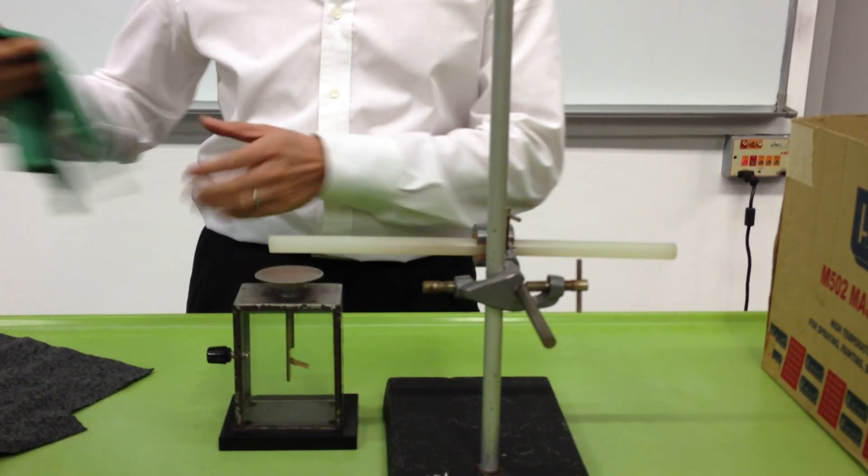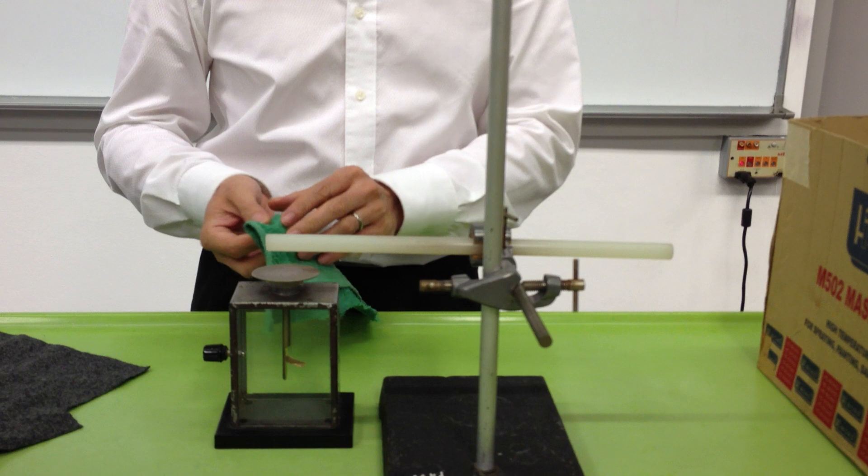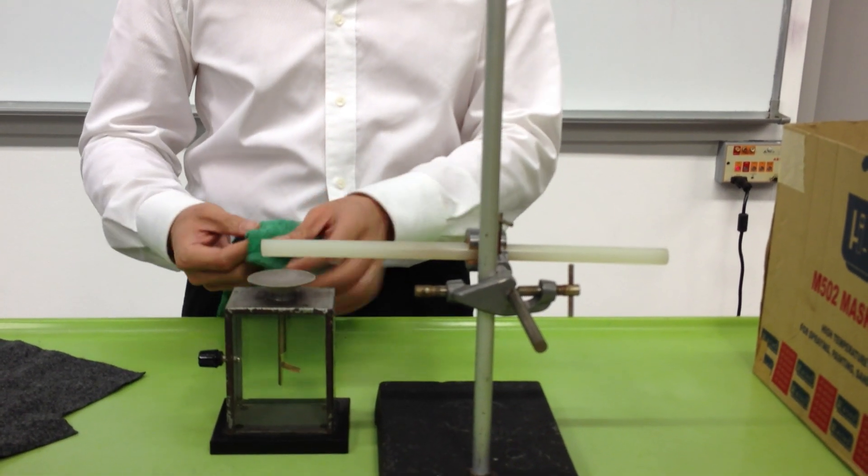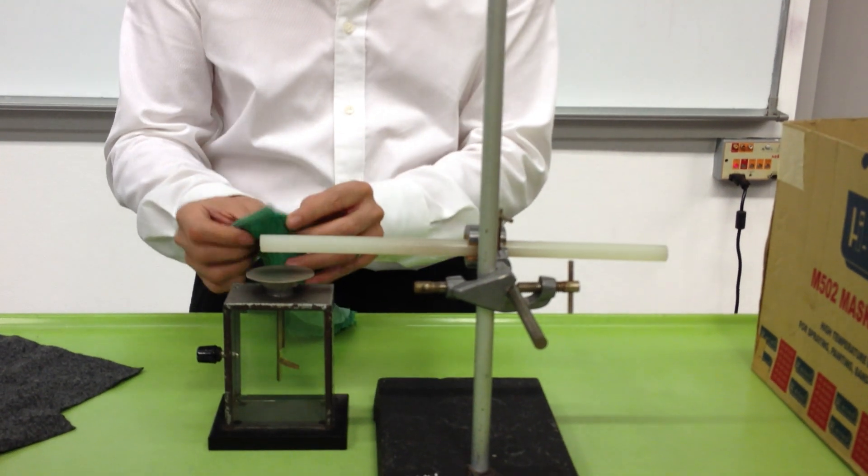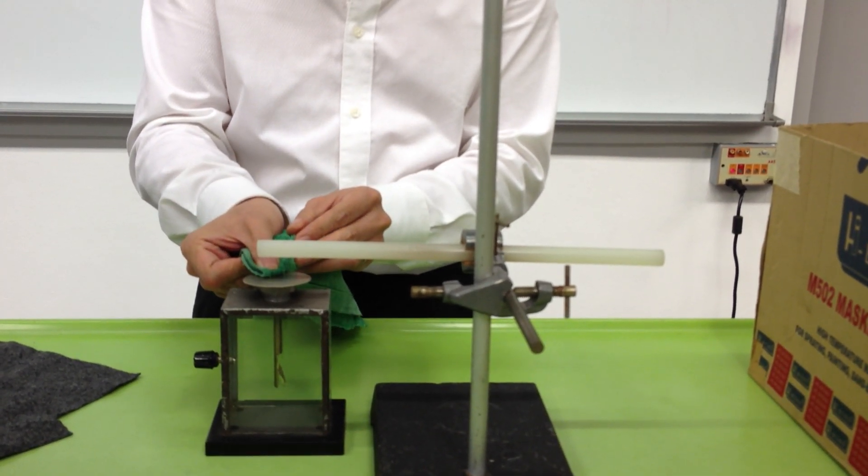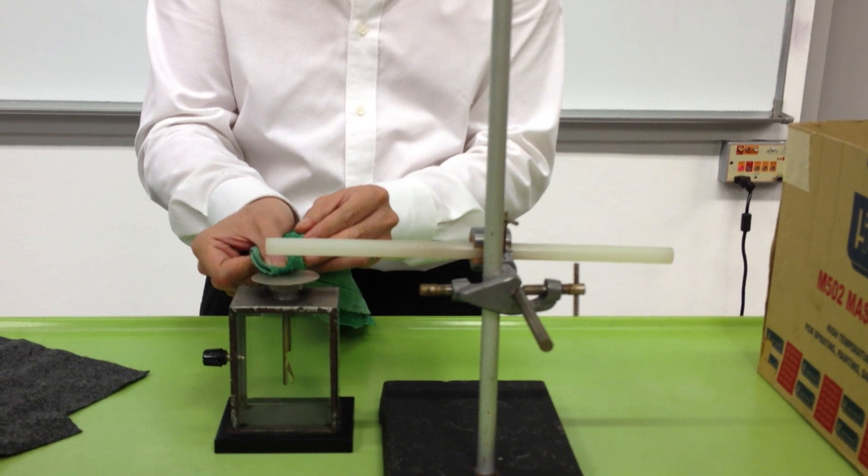You can see that the deflection is quite a bit. Now, this time, I'm going to discharge the electroscope using a slightly damp cloth to touch the top plate of the electroscope.